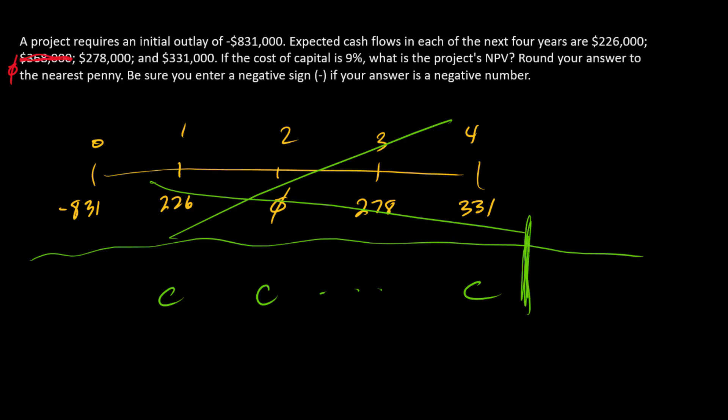And so this part of the problem would just be the present value of the annuity. And so that's just going to be C times an annuity factor with the appropriate exponent. And we're done there.